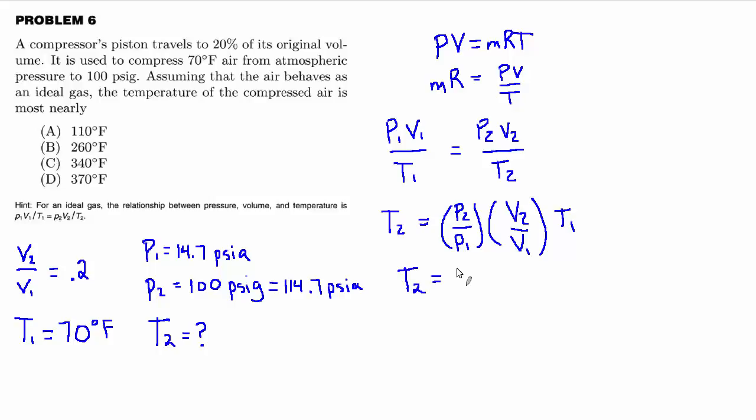So both pressure units are in PSIA. And then the ratio of V2 to V1, we don't actually know the volumes. We just know that it was reduced to 20% of its original volume. So we have the value of this ratio.